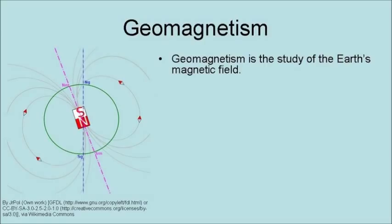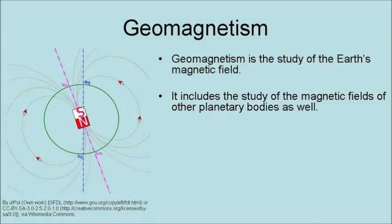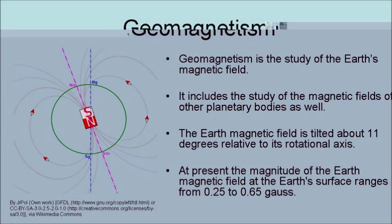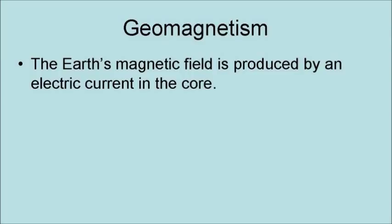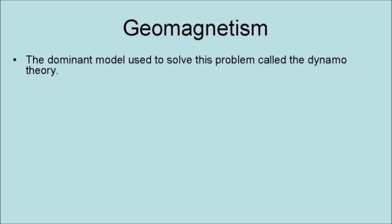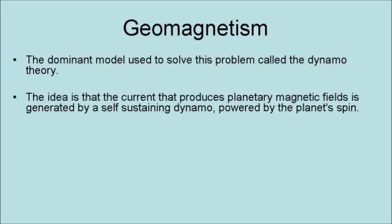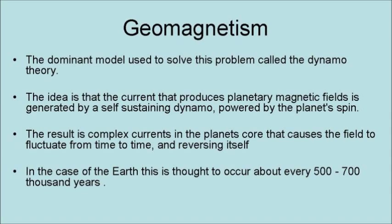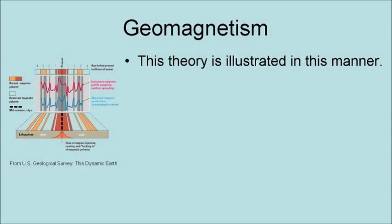Geomagnetism is the study of the Earth's magnetic field, including the magnetic fields of other planetary bodies. The Earth's magnetic field is tilted at about 11 degrees relative to its rotational axis, and the present magnitude ranges from 0.25 to 0.65 Gauss at the Earth's surface. The Earth's magnetic field is produced by an electric current in the core. However, measurements since 1900 have shown a net loss of field energy of about 5%, equivalent to a half-life of 1,465 years. The dominant model used to address this is called the dynamo theory — the idea that the current producing the planetary magnetic field is generated by a self-sustaining dynamo powered by the planet's spin, resulting in complex currents in the planet's core that cause the field to fluctuate and, from time to time, reverse itself. In the case of the Earth, this is thought to occur about every 500,000 to 700,000 years.